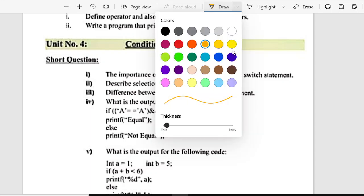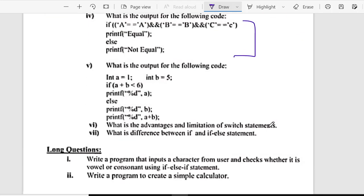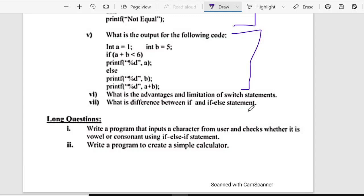Chapter 4, Conditional control structure. Number one short, the importance of break and default statement in switch statement. Number two, describe selection structure. Number three, differentiate between switch and nested if statement. Number four, what is the output for the following code? This code is full, you have to tell its output. Fifth, you have to tell its output. Your code is full. Sixth, what are the advantages and limitations of switch statement? And seventh is, what is the difference between if and else statement?